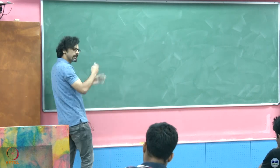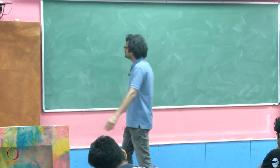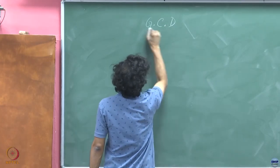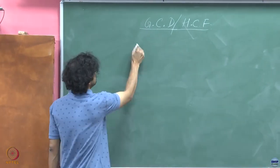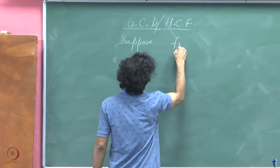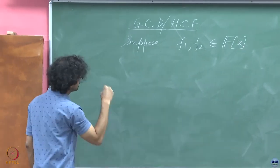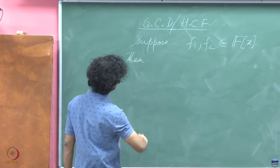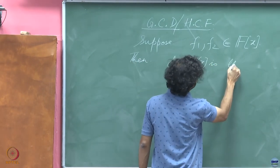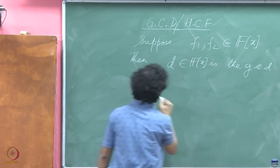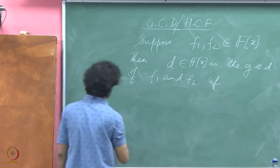We will define the GCD of polynomials. We will take 2, but you can easily generalize it to multiple polynomials in the same manner. So, the GCD, or you can write the HCF, whatever you are comfortable with. Suppose F1 and F2 belong to the ring of polynomials, then D in F(x) is the GCD of F1 and F2 if it satisfies the following properties.